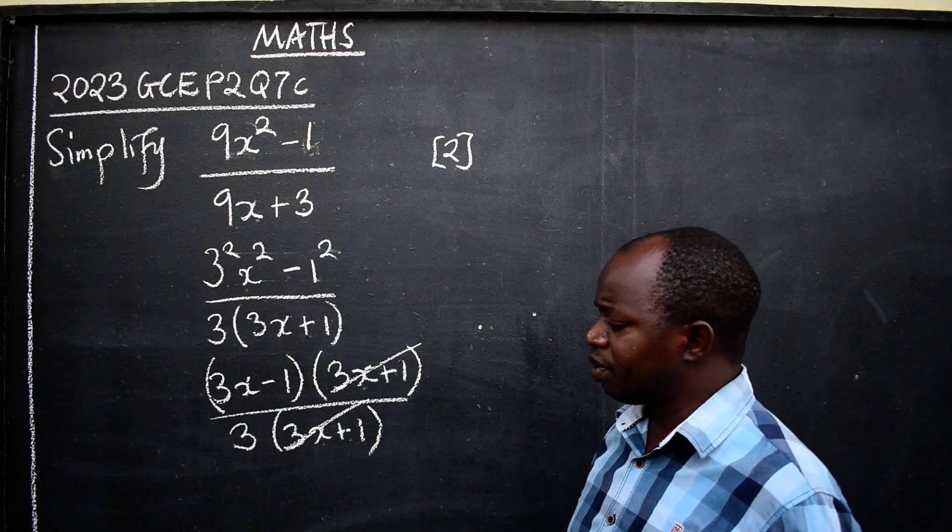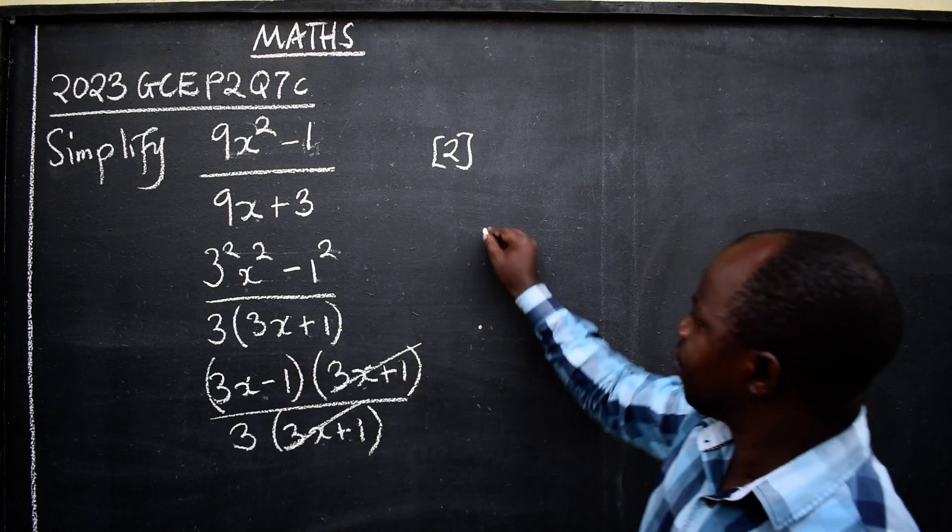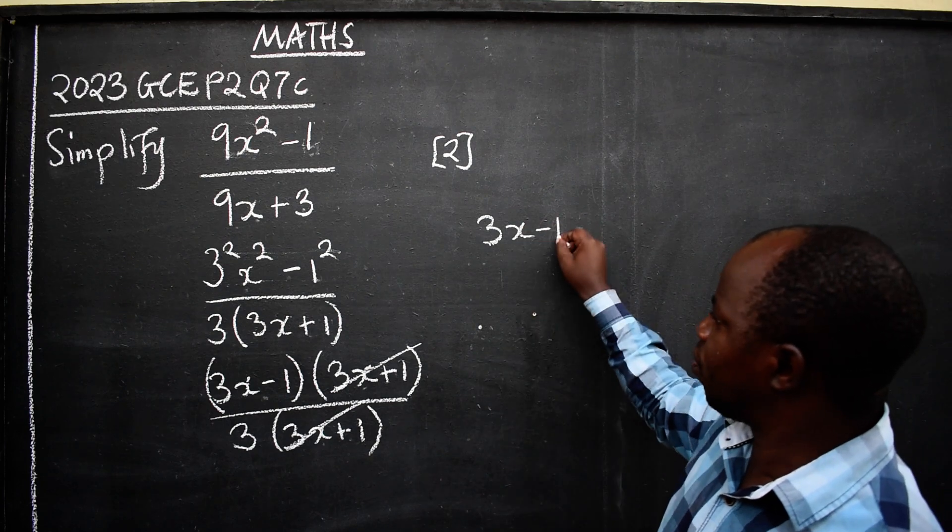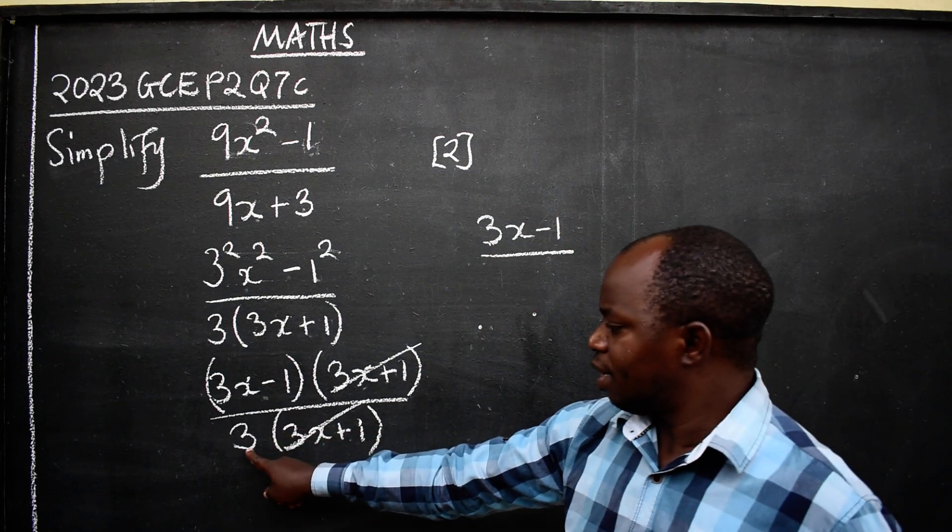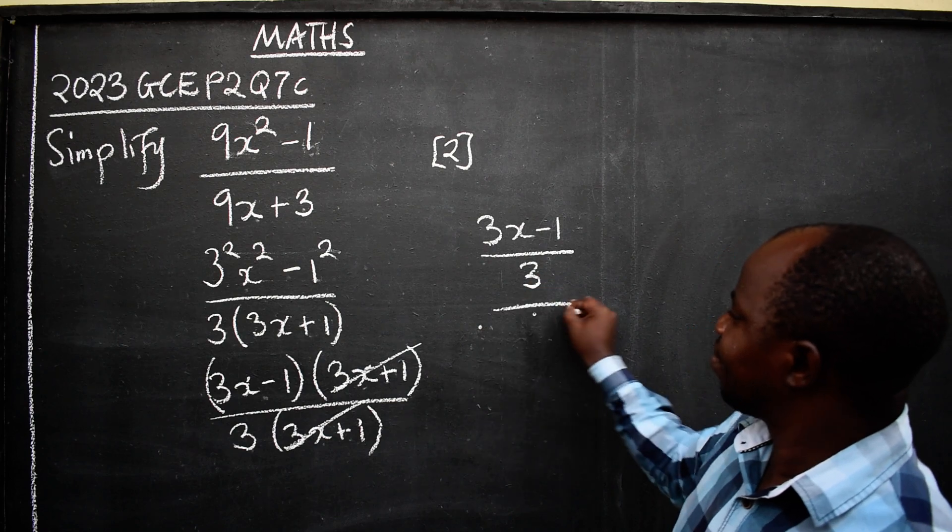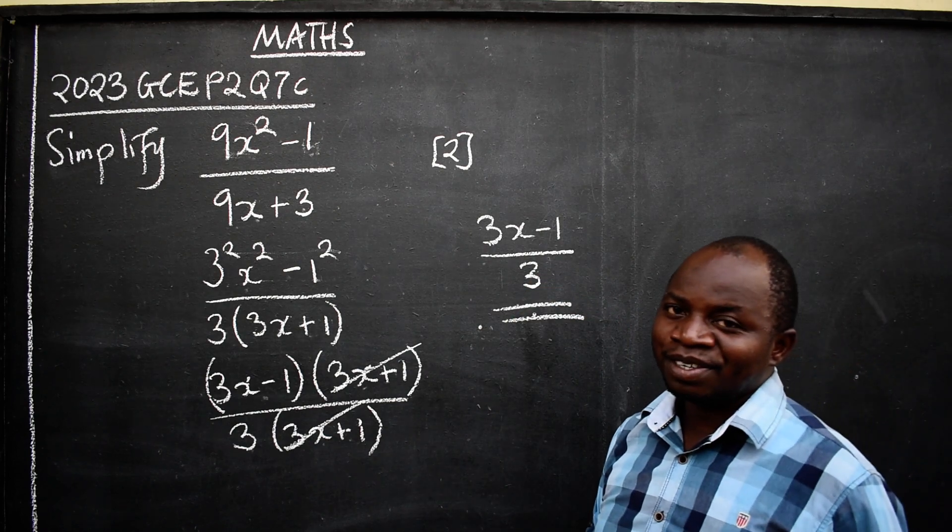You're going to write what is going to remain, which is 3x minus 1 over 3. End. Is it clear?